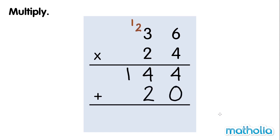Now we multiply the tens. 20 times 3 tens equals 60 tens. 60 tens equals 6 hundreds. 600 plus 100 equals 700.